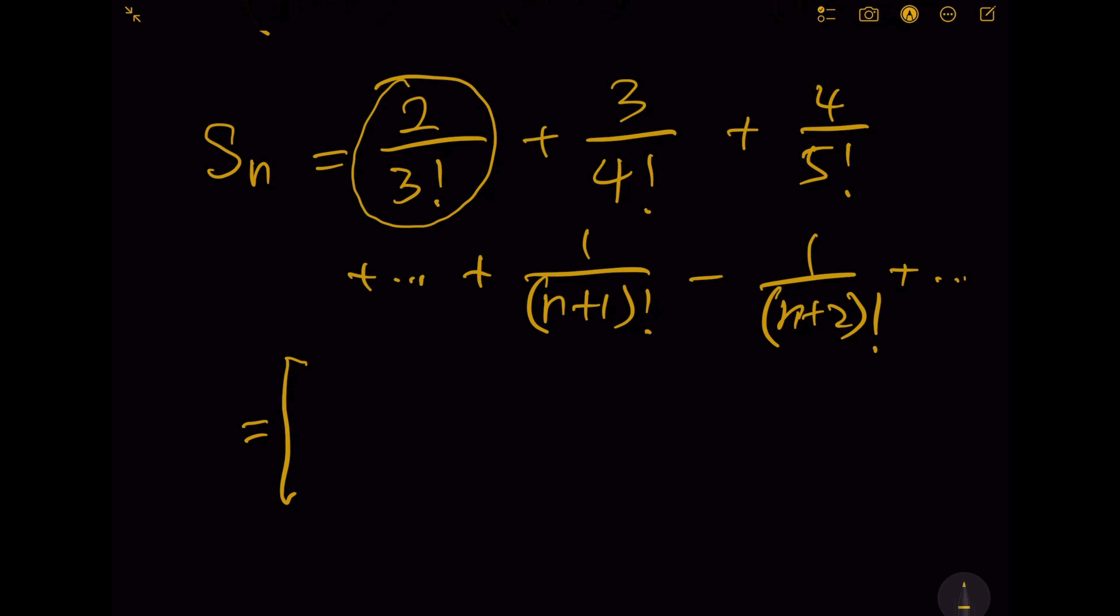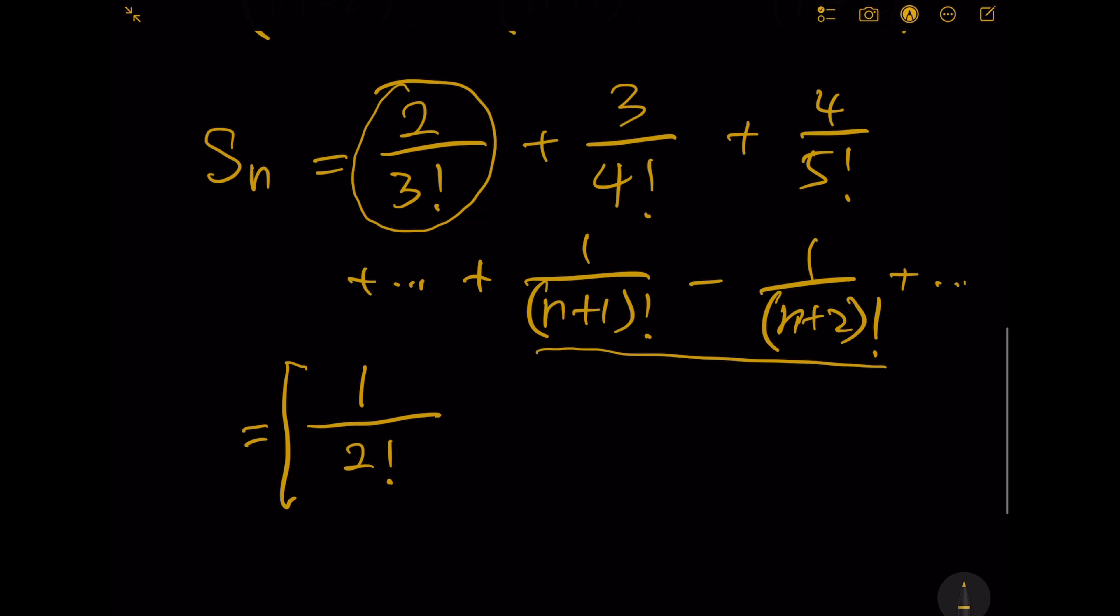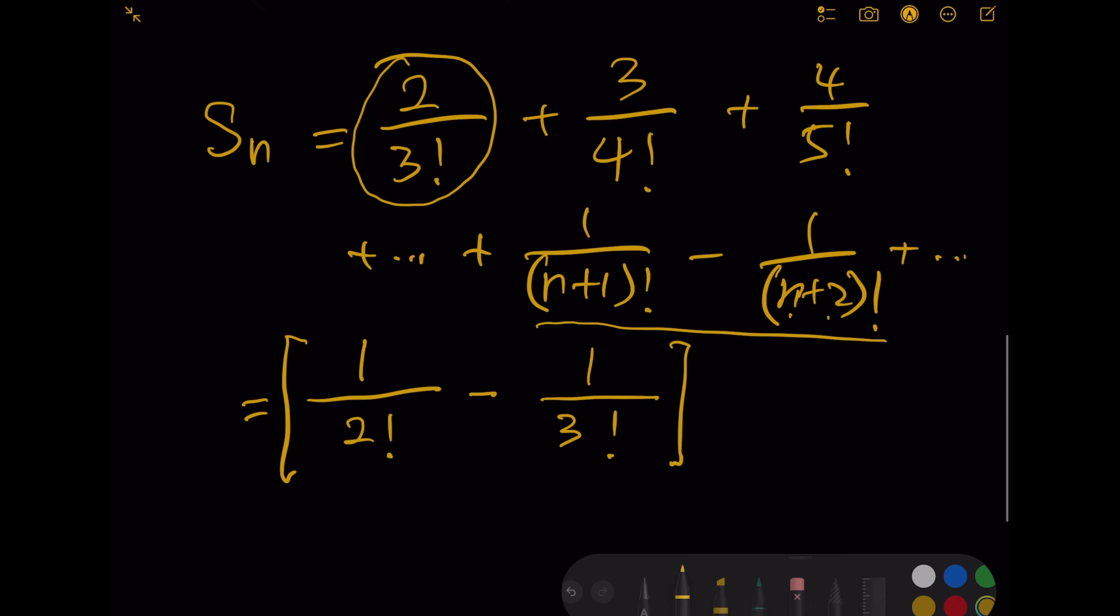Which is 2 over 3 factorial, can be transformed to the equation here, which is 1 over 2 factorial minus 1 over 3 factorial. This is the first term. The second term...